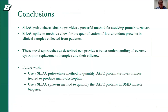In conclusion, SILAC pulse-chase labeling provides a powerful method for studying protein turnover. SILAC spike-in methods allow for the quantification of low-abundant proteins in clinical samples collected from patients. These novel approaches can provide a better understanding of current dystrophin replacement therapies and their efficacy. In our future work, we will use a SILAC pulse-chase method to quantify DAPC protein turnover in mice treated to produce micro-dystrophin.